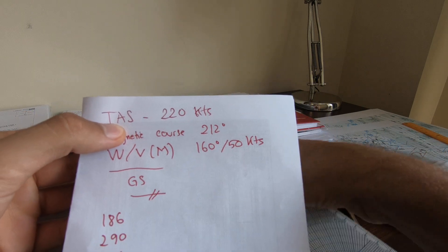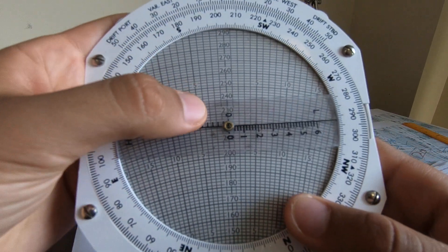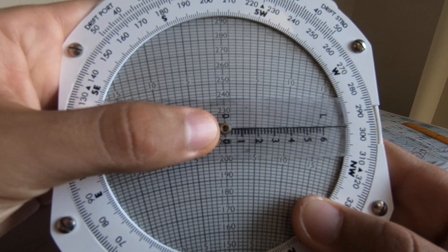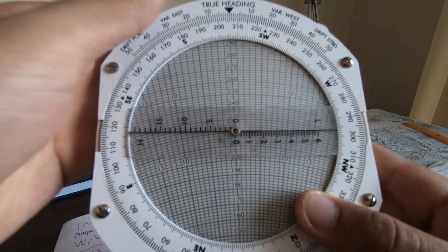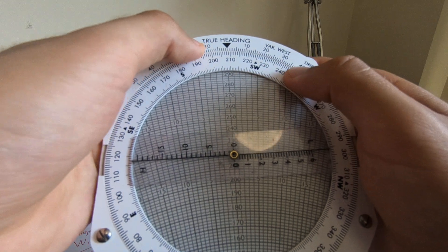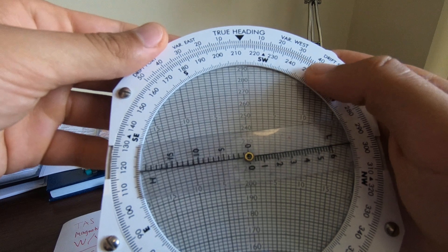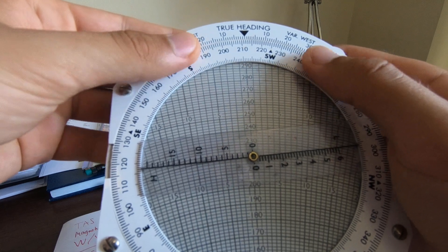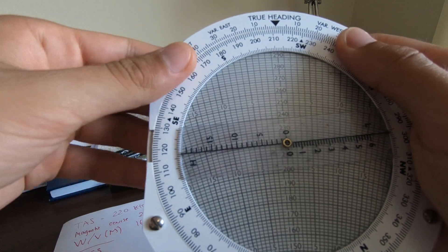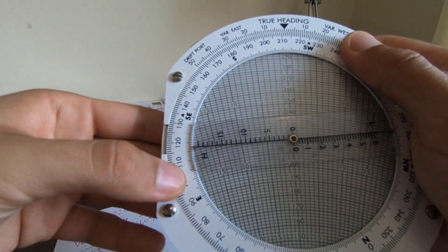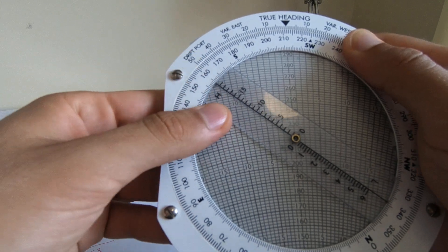So let's start with the true airspeed which is 220. We have to put 220 in the center, as you can see it's already put by me. Then magnetic course is 212. So here where it says true heading, just be careful, it says true heading but for the moment we have the course, so we go for 212. And then the wind is from 160, so we have to look for 160, and it's 50 knots. 50 knots is right here: 10, 20, 30, 40, 50.